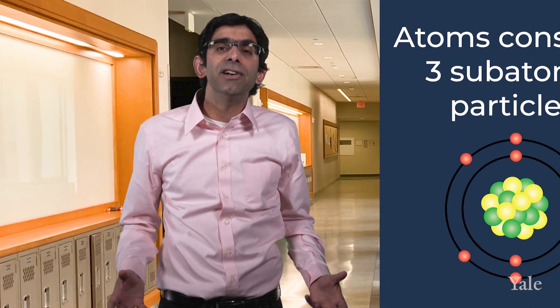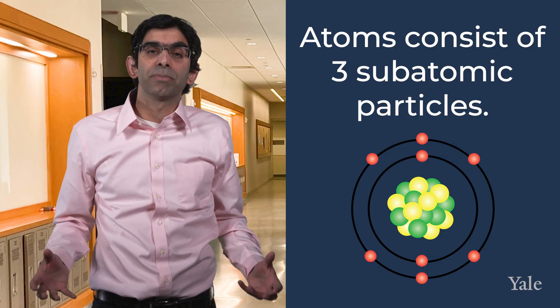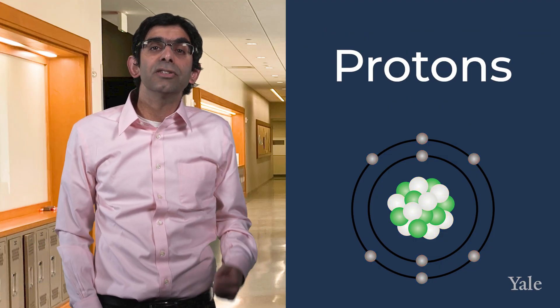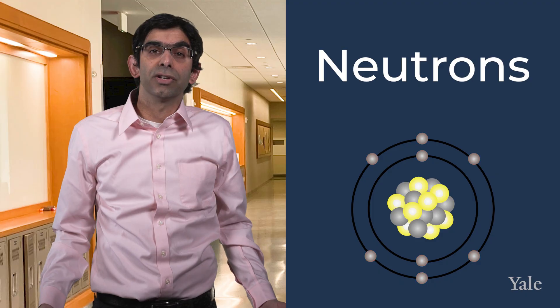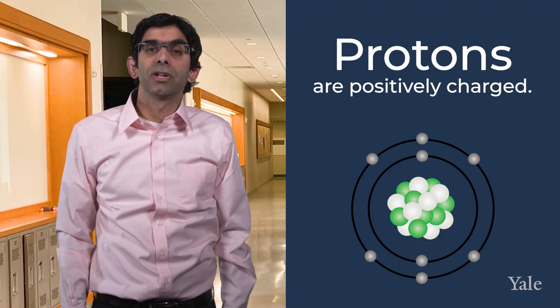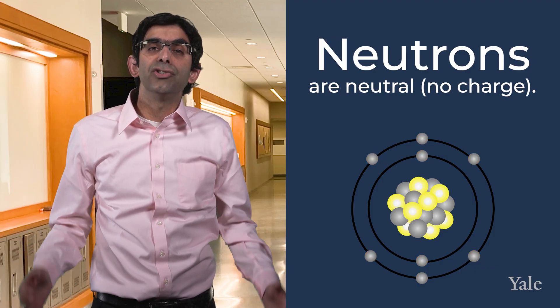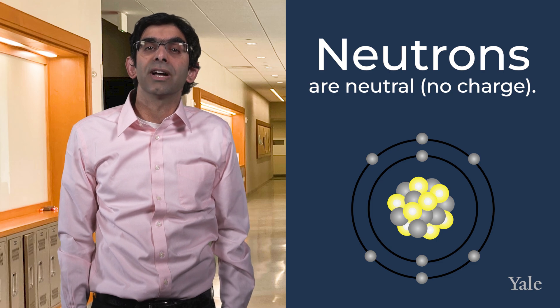Previously, you may have learnt that atoms are the smallest unit of matter. But in our current model, atoms consist of three different types of subatomic particles: protons, electrons and neutrons. Protons are positively charged particles. Electrons are negatively charged particles. And neutrons are neutral particles with no charge. Protons and neutrons create the dense, positively charged centre of the atom, known as the nucleus.